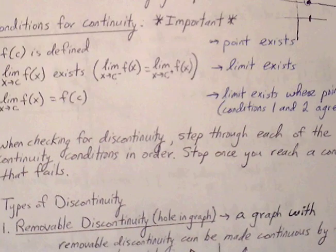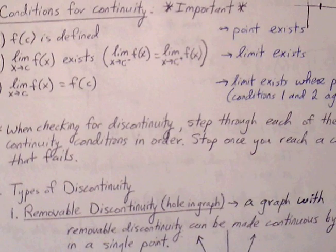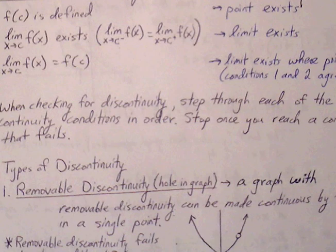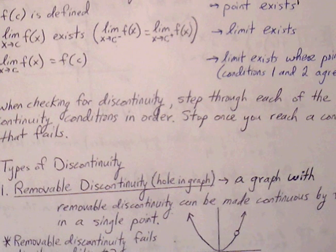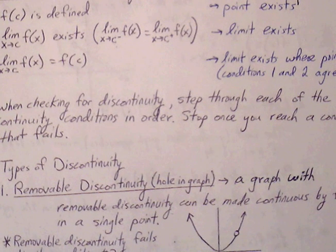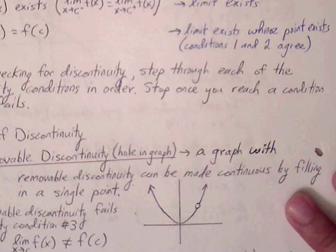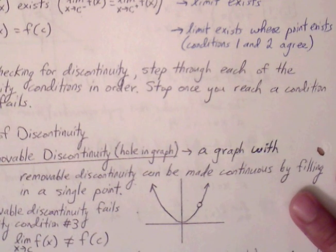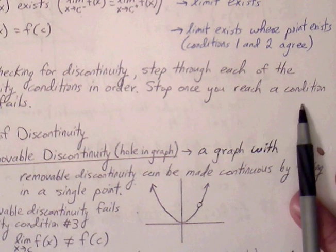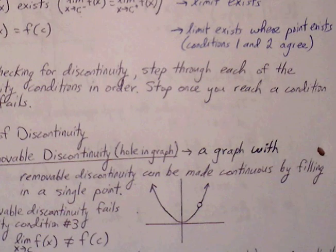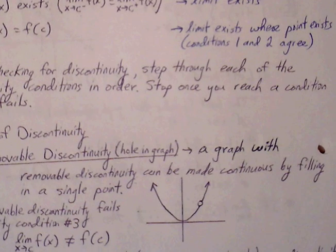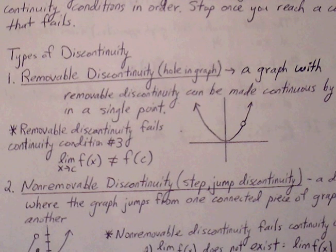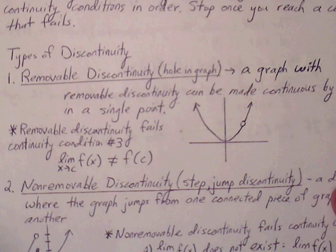When checking for discontinuity, we step through each continuity condition in order and stop once we reach a condition that fails. There are different types of discontinuity. The first type is removable discontinuity, where there is simply a hole in the graph.